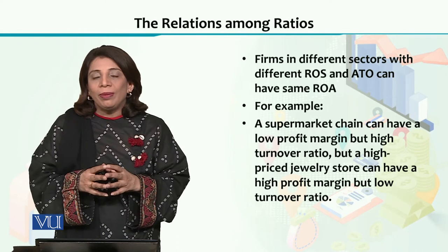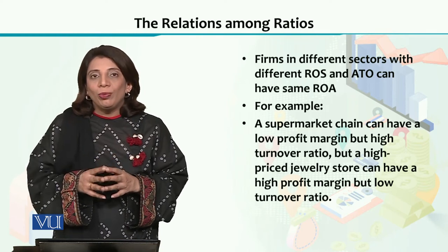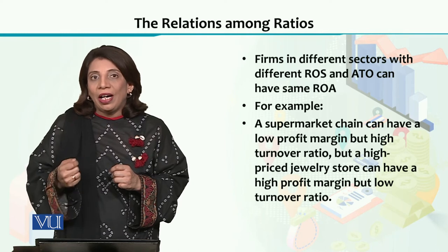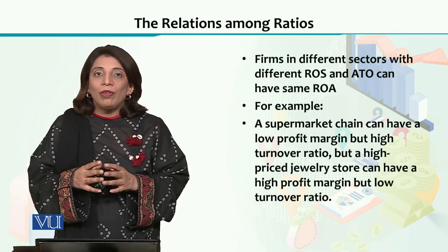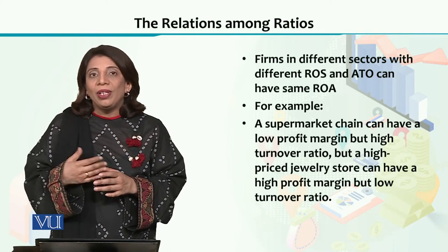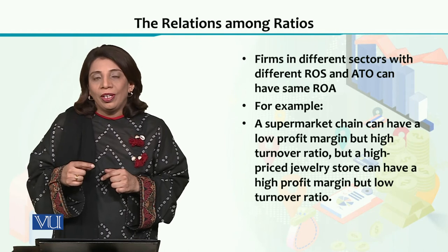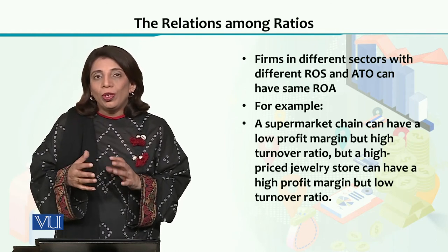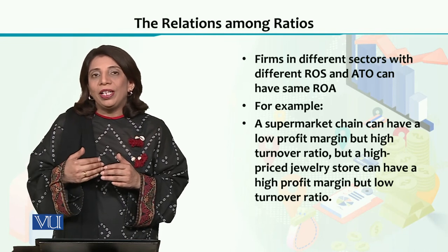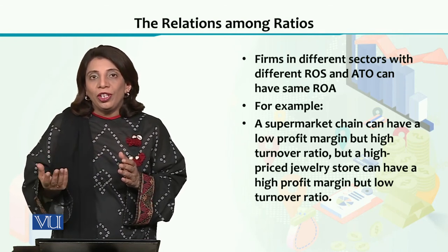To illustrate this with an example: consider a supermarket chain where the overall profit margin is low but the asset turnover ratio can be very high. On the other hand, a jewelry shop sells expensive items so the profit margin is higher, meaning ROA will be larger but the turnover ratio will be smaller compared to the supermarket. Both may have different values of return on sales and asset turnover ratio, yet the ROA calculated for both the supermarket and the jewelry shop may turn out to be the same.